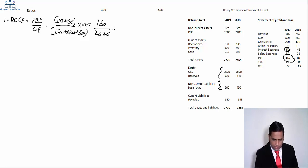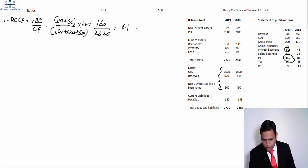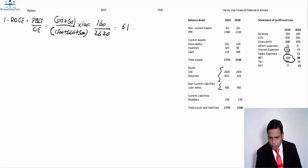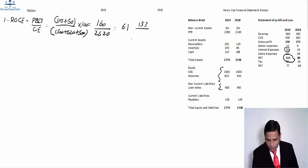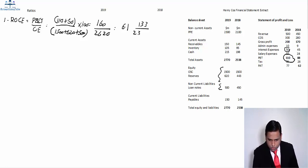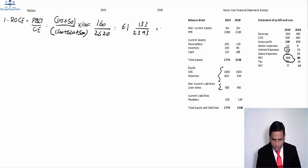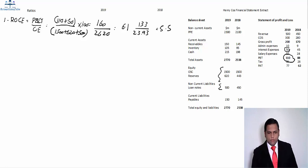This gives us 160 divided by 2620, multiplied by 100, giving 6.1% for 2019. For 2018, we have profit before tax of 88 and interest expense of 45, giving PBIT of 133. Capital employed is 1500 plus 443 plus 450, giving 2393. Computing that and multiplying by 100 gives 5.5%.